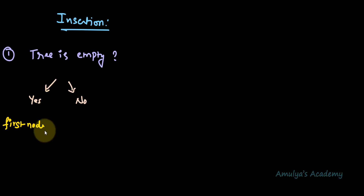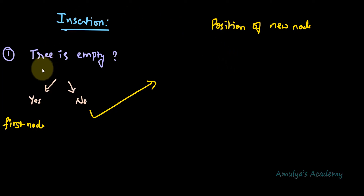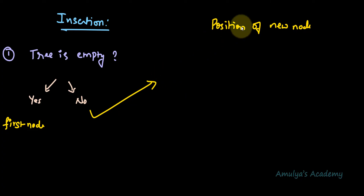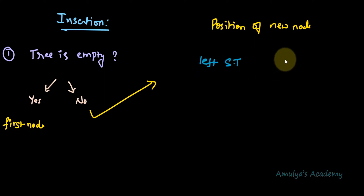If the tree is empty then the node we are inserting will be the first node. If it is not empty, that means the tree contains one or more nodes, so we need to find the position of the new node. Because a binary search tree is a binary tree, we need to place the new node either in the left subtree or right subtree.